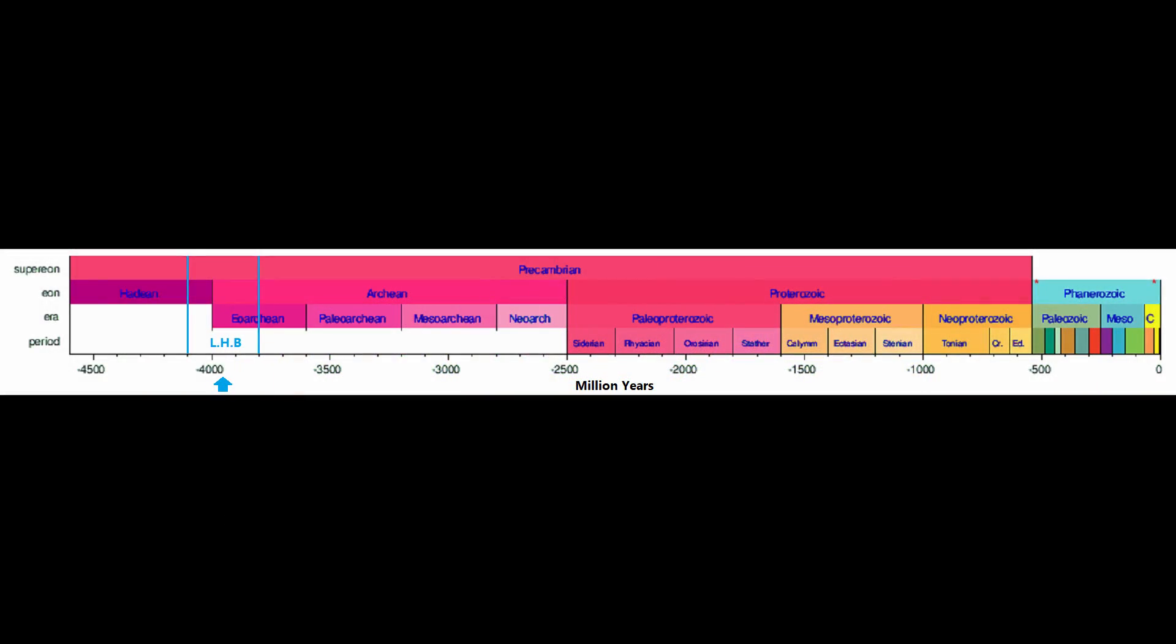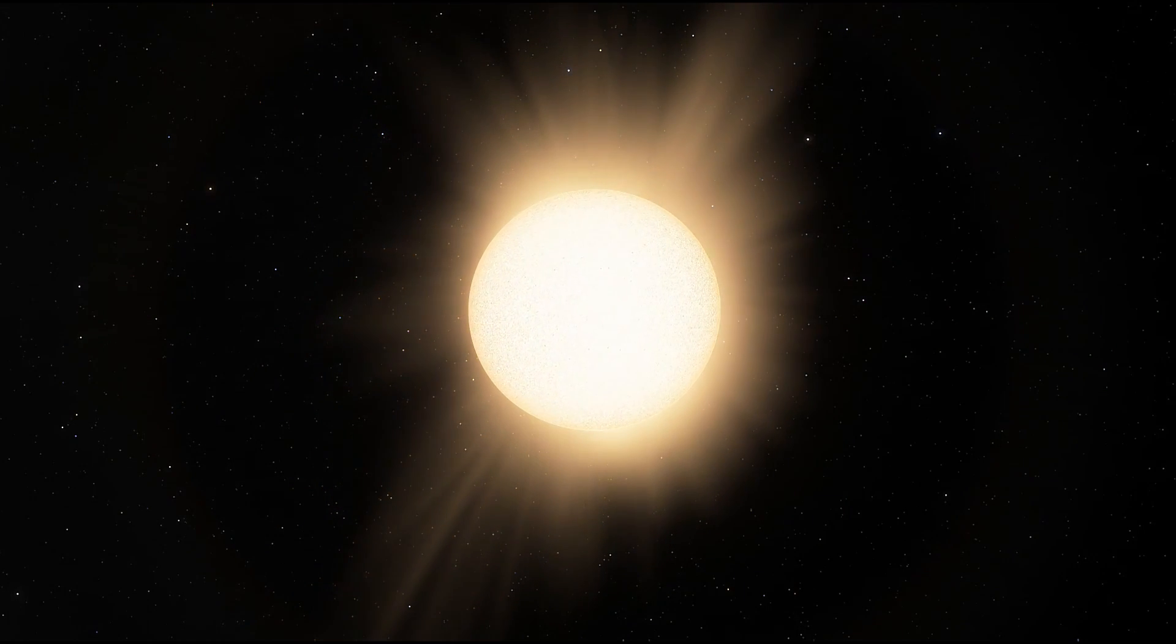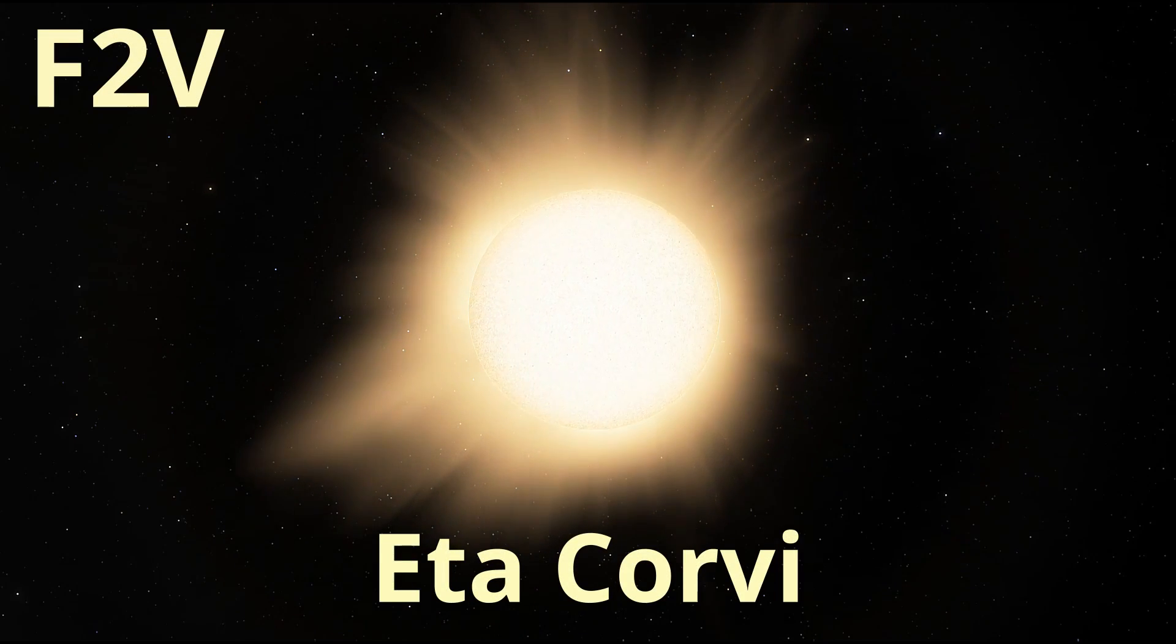This lasted for roughly 200 million years, ending 3.8 billion years ago. An example of a modern system with similar conditions for this is the F-type star Eta Corvi.